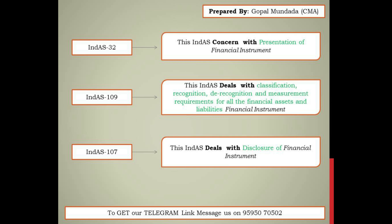These Indian AS are also dependent on each other because some provisions related to financial instruments are provided in Ind AS 109, some in Ind AS 107, and some are covered under Ind AS 32. To summarize: Ind AS 32 deals with presentation of financial instruments, Ind AS 109 mainly deals with measurement, recognition, and de-recognition, and Ind AS 107 mainly deals with disclosure of financial instruments.